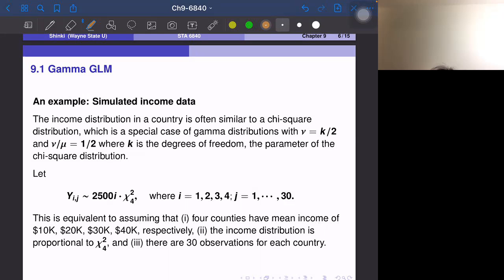A very small number of people earn a lot of money and the majority of people earn a small amount of money. And the income distribution is often similar to the chi-square distribution.